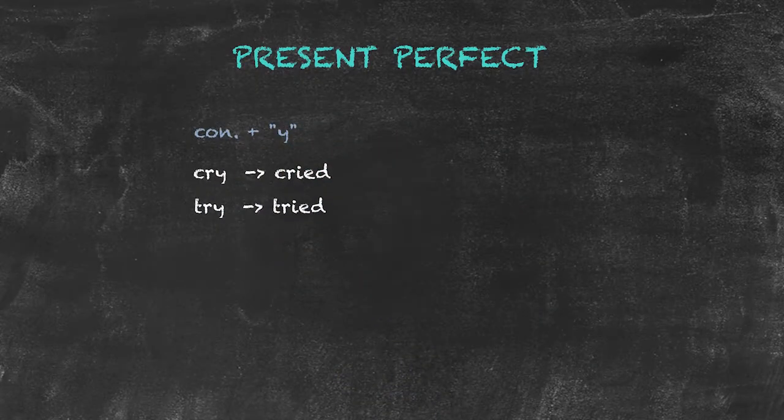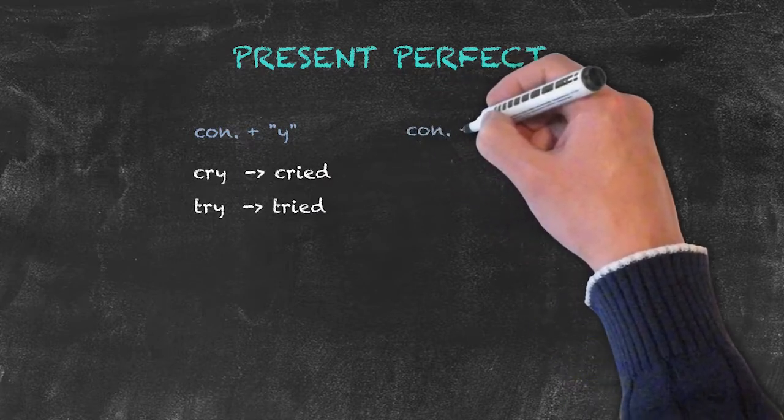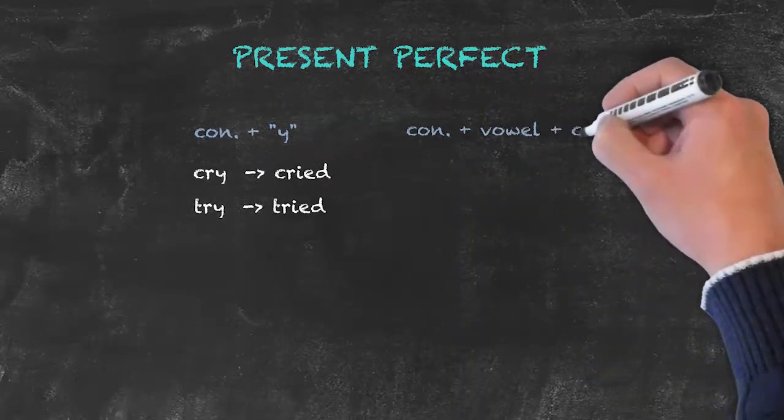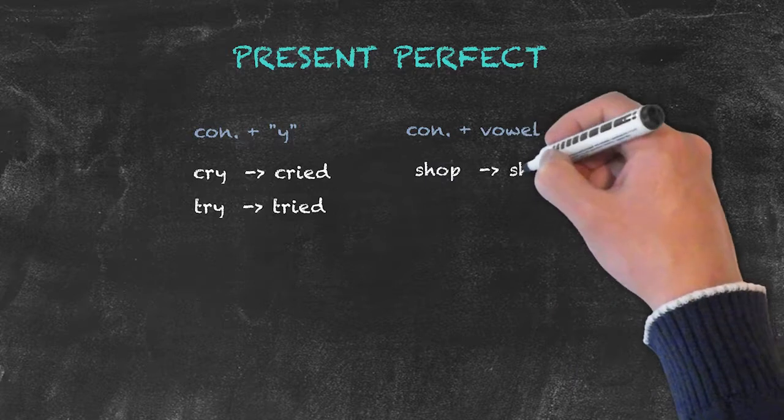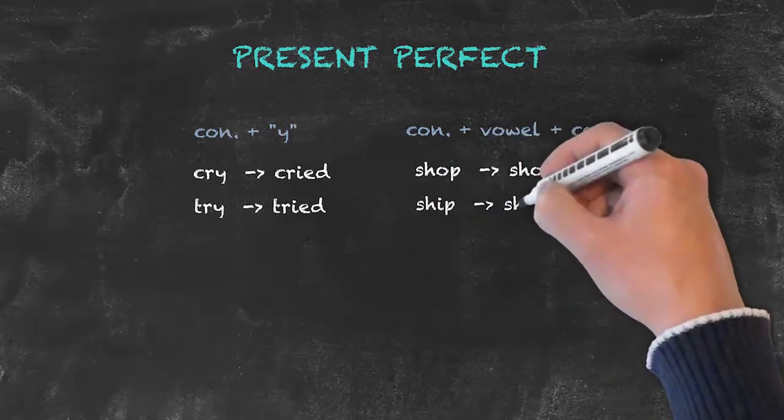Another spelling pattern we have to be aware of is our consonant plus vowel plus consonant. In these instances, we double the consonant used. Shop needs the double P, ship needs the double P.